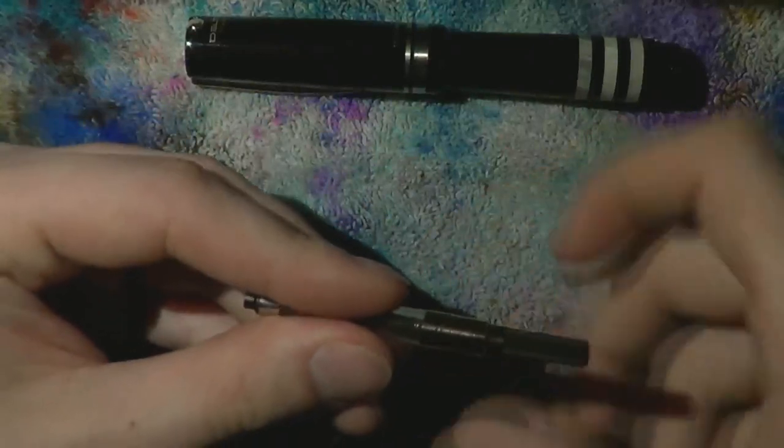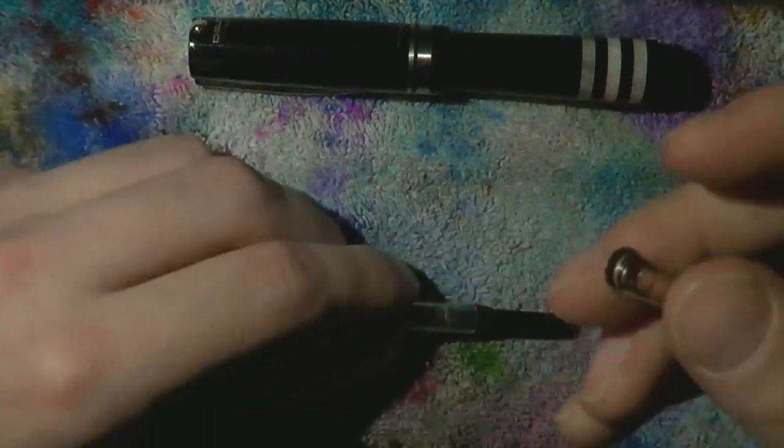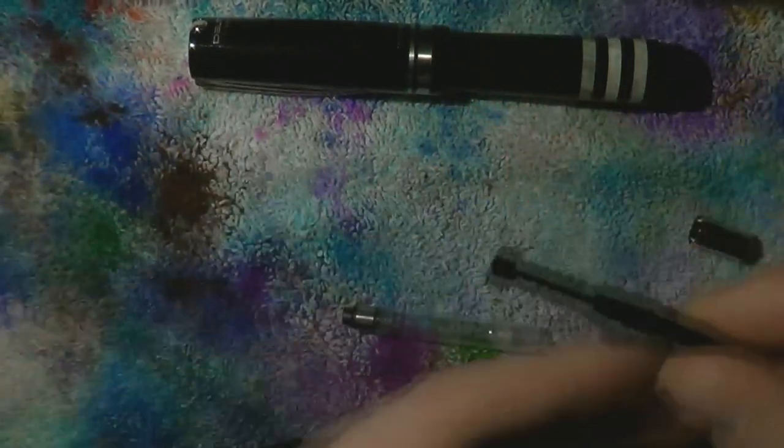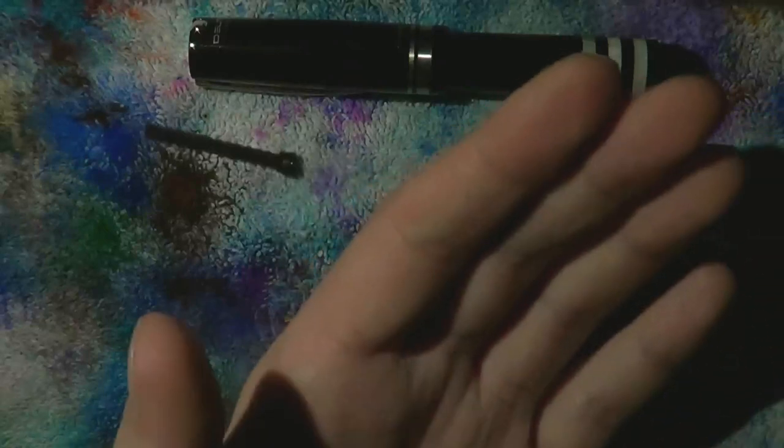Grab the ink reservoir. Grab this metal ring. Give them a firm twist. You can unscrew them. Metal ring comes off. Piston can be pulled out. Piston can be removed completely.